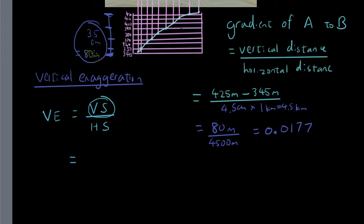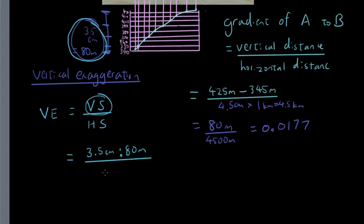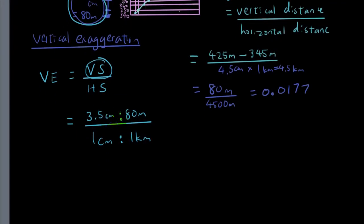So what is the vertical scale? Vertical scale, as I have mentioned previously, it's 3.5 centimeters to 80 meters. And what is the horizontal scale? Horizontal scale is 1 centimeter to 1 kilometer. Now you're thinking, how on earth do we divide this? Well, the first thing we got to do is make sure all the units are the same. So let's just convert it all to the smallest unit, which is centimeters. So I have 3.5 centimeters to 80 meters, so meters to centimeters, just times by 100. So that's 8,000 centimeters. And then I have 1 centimeter to 1 kilometer. So that's 1,000 meters, which is add another two zeros. 1 kilometer is 100,000 centimeters.